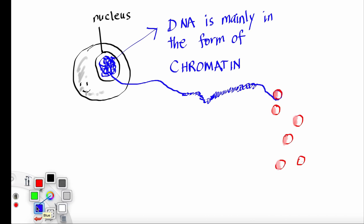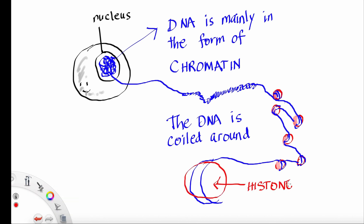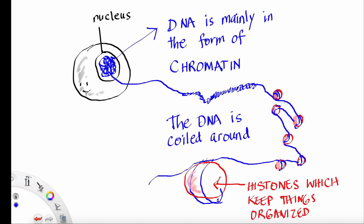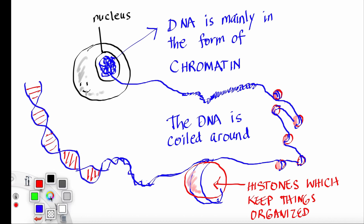DNA is mainly in the form of chromatin. Chromatin is wrapped around histones, which keep things organized, and you can see how chromatin is related to the double helix.